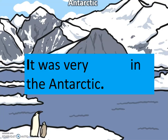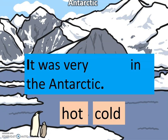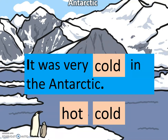The Antarctic. It was very something in the Antarctic — my blank word is hot or cold. Which do you think is most suitable for that sentence? Pause the video and have a try. That's right — it was very cold in the Antarctic. The Antarctic is a very cold place, so hot wouldn't be the right word to use. Can you see I have started my sentence with a capital letter and ended it with a full stop?